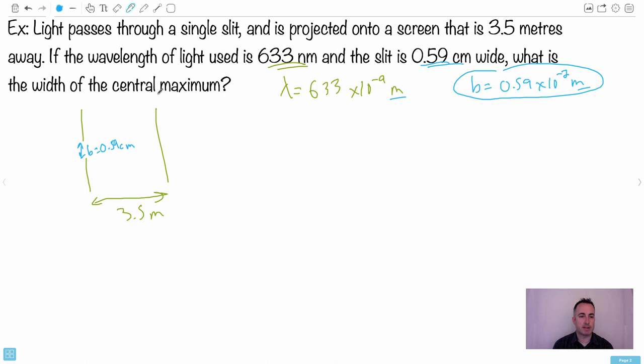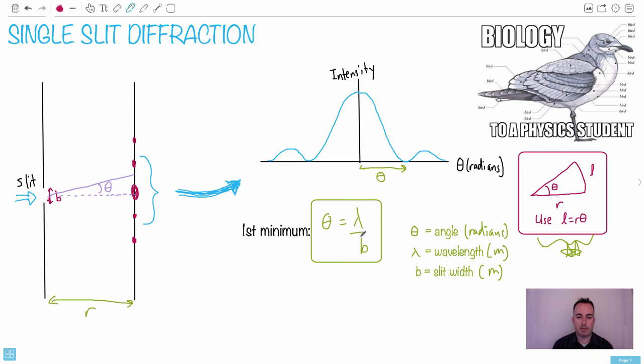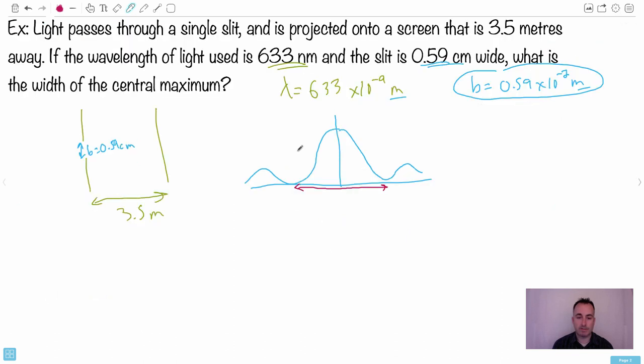Now we got everything in meters. So we want the width of the central maximum. The central maximum that we're looking for is this whole thing right here. But we know that equation theta equals lambda over B, that's for the first minimum. That's going to be helpful. So let's try to find that angle. We can find that angle theta because theta is lambda over B, which is 633 times 10 to the minus 9 meters over B which is 0.59 times 10 to the minus 2 meters.